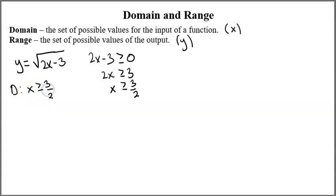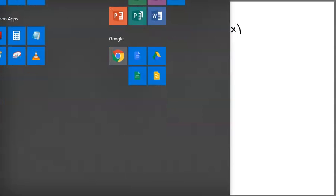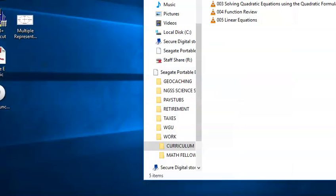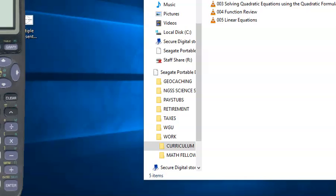So the range - we want to ask ourselves what are the possible outputs I can have in this function. Now the range is going to be what values of Y can I get out. Because this is the smallest value I can have, let's plug in this value for X and see what I get.